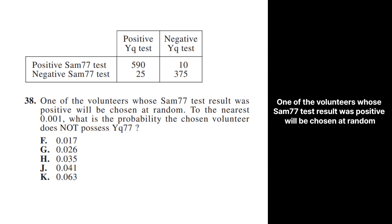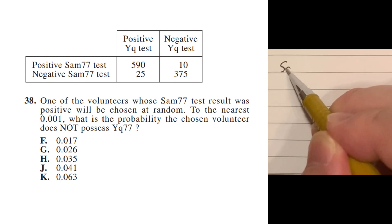One of the volunteers whose SAM-77 test result was positive will be chosen at random. To the nearest 0.001, what is the probability the chosen volunteer does not possess YQ77?